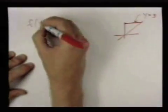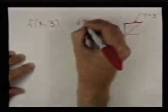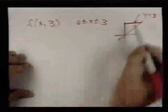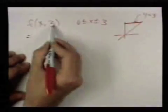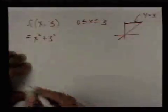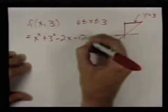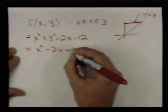The next part is the line y=3. I'm going to plug 3 in for y, and the x values go from 0 to 3. I want to find the absolute maximum and minimum values of this one-variable function as x goes from 0 to 3. Referring back to the original function, plugging x and 3 into it, you end up with x²+3²-2x-12, so you get x²-2x-3.